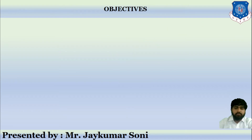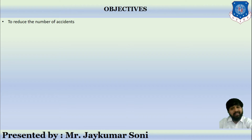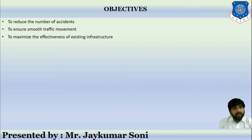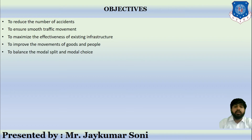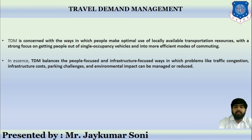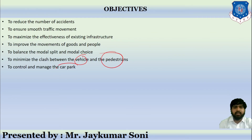Before learning anything, we need to have a proper understanding of why we are learning it. These are the objectives of traffic system management: first, to reduce the number of accidents; then to ensure smooth traffic movement; to maximize the effectiveness of the existing infrastructure; to improve the movement of goods and people; to balance the modal split and modal choice; and to minimize the clash between vehicles and pedestrians. There is also another objective of controlling and managing car parking.